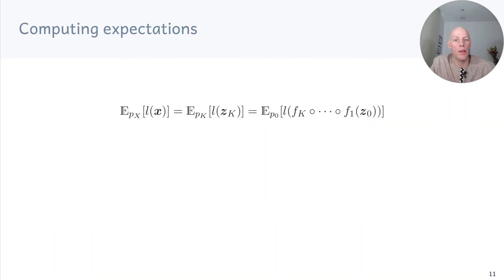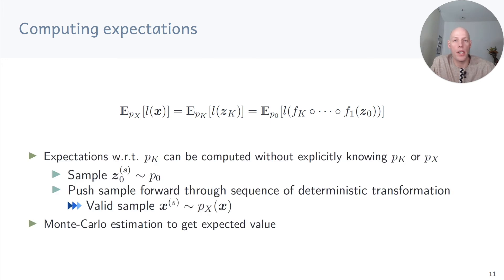Now let's get back to computing expectations with normalizing flows. Assume we have a loss function L and we want to compute an expected loss with respect to p of x. We know that p of x equals the distribution at the end of the normalizing flow, obtained by deterministic transformations of a base distribution. The expected loss with respect to p of x can therefore be written as the expected loss of a transformed random variable with respect to the base distribution — and we do not need to know what p of x actually is. To compute the expectation, we sample from the base distribution, push the sample forward through the sequence of deterministic transformations to obtain a valid sample from p of x, and use a Monte Carlo estimator to get the expected loss.